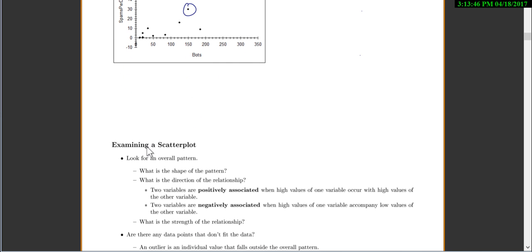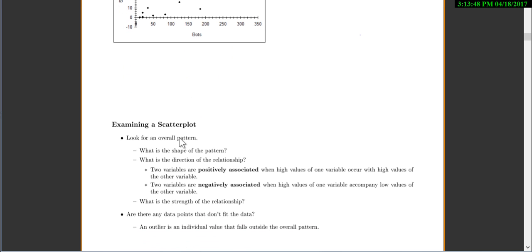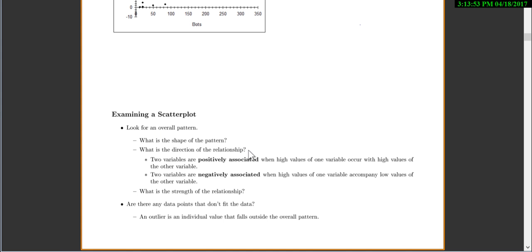Now, what do we look for when we do something like this? We're looking for an overall pattern. So we might say, what's the shape of the pattern? What's the direction of the relationship? One of the things that means we look for is which direction is the slope going if it was a line. So we say two variables are positively associated when high values of one variable occur with high values of the other variable. That means you'd be going up like this, so you'd have a positive slope.